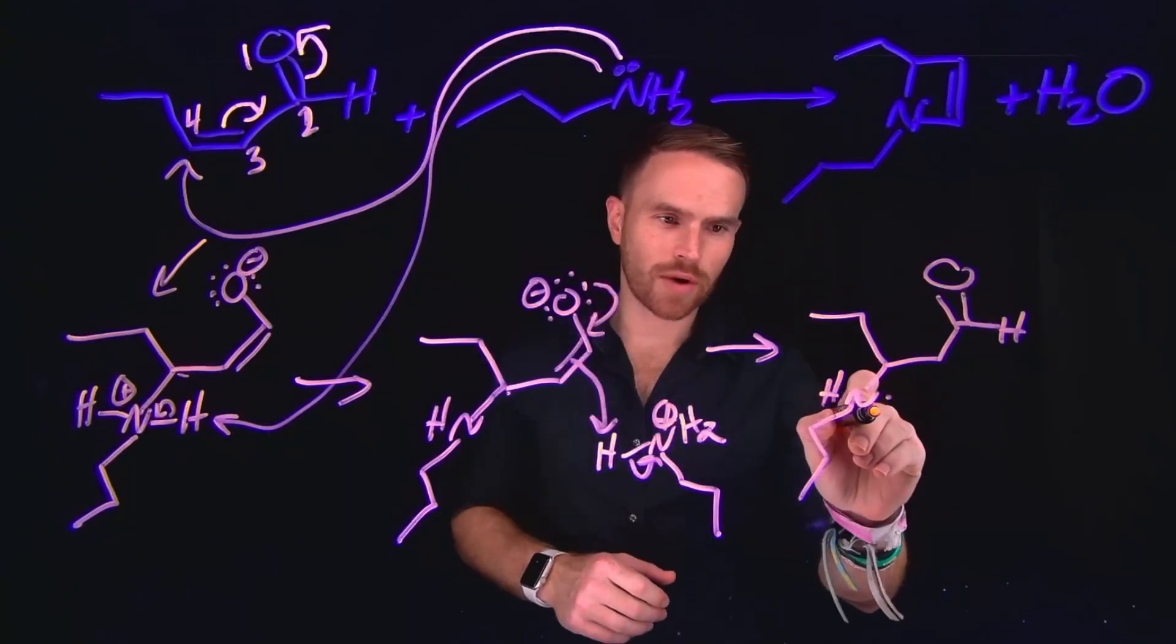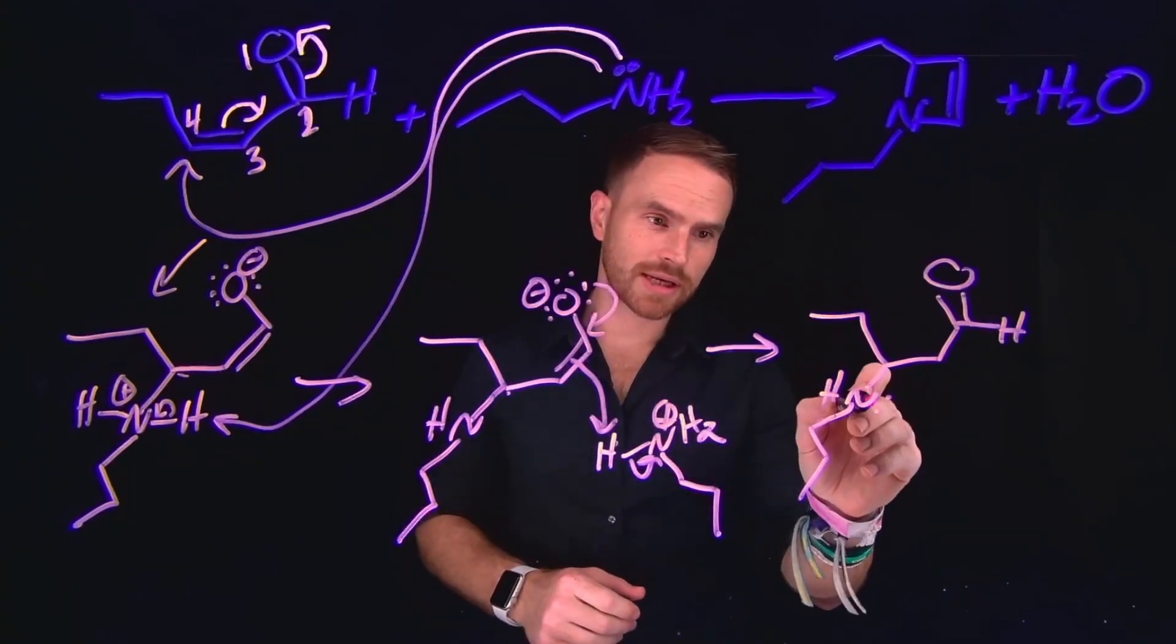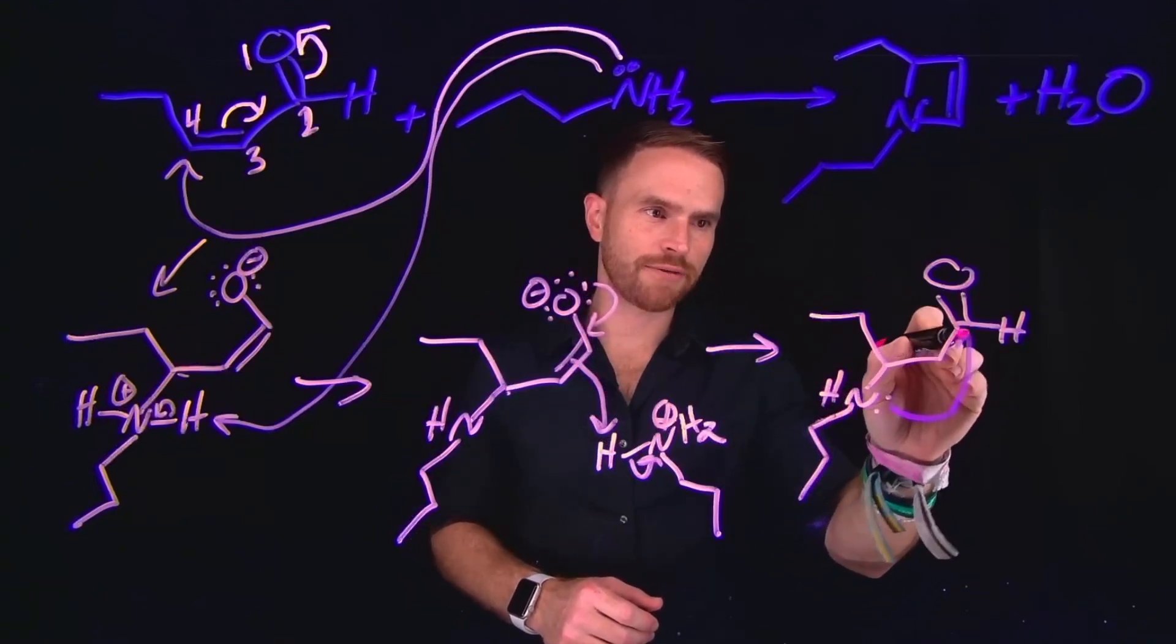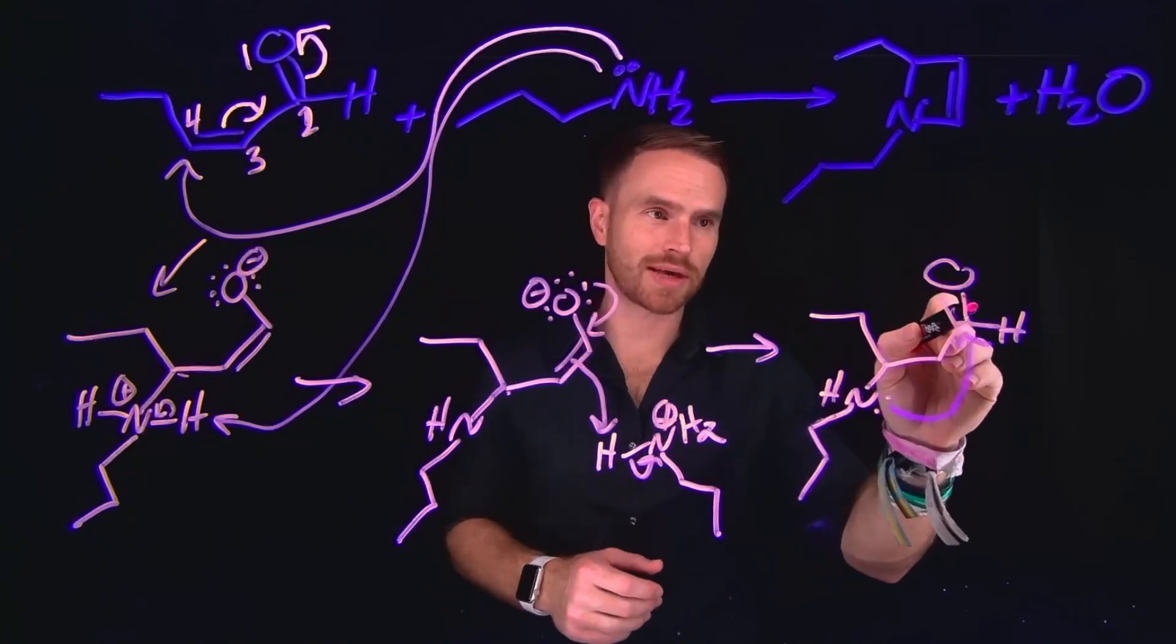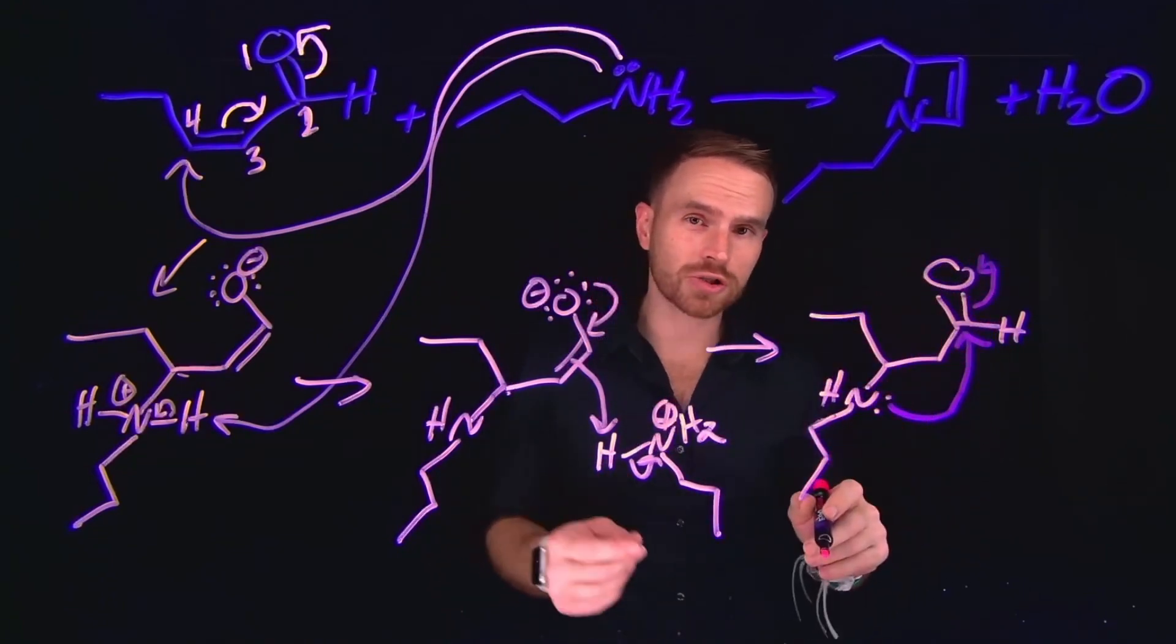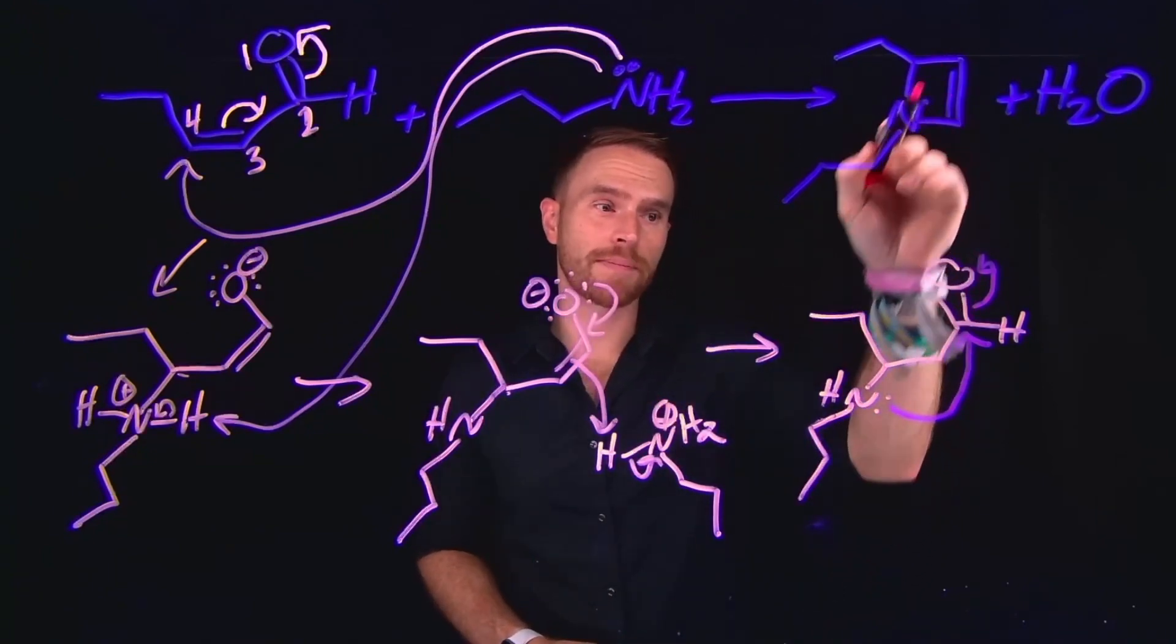Now that we've regenerated this aldehyde, the nucleophilic nitrogen atom has regained its lone pair, it can do a nucleophilic attack at this carbonyl carbon. This again is going to kick up the pi electrons back to oxygen. And notice that this is also going to be what generates our four-membered ring.